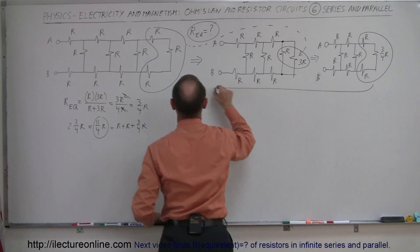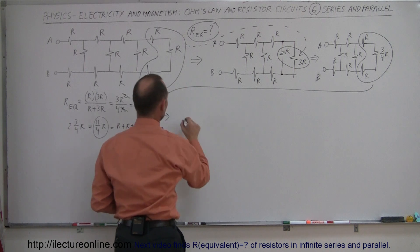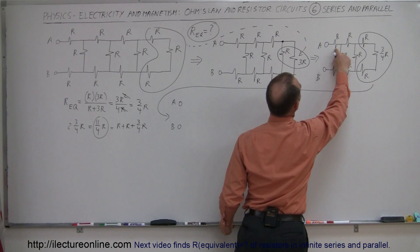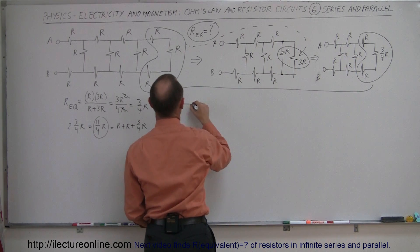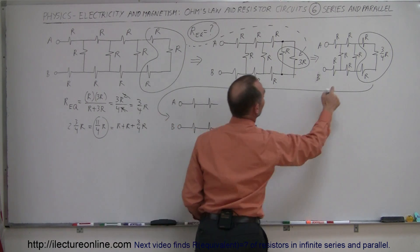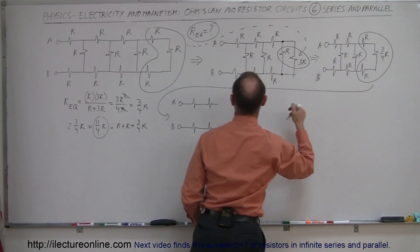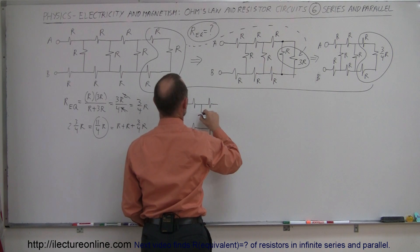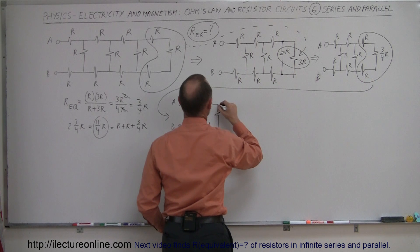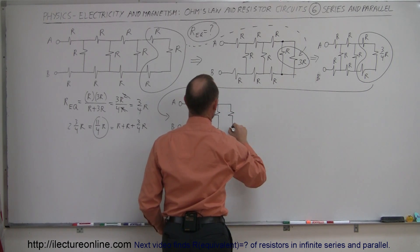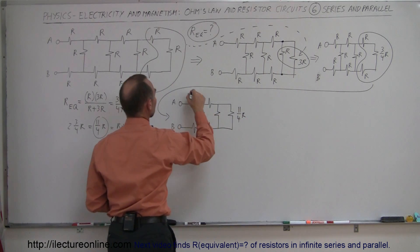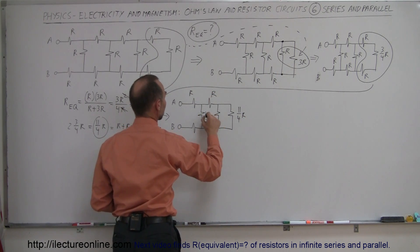So now we're going to redraw the circuit. In our circuit we still have an A and a B. Notice we still have these two resistors down here the same, and we still have this resistor and this resistor. Now those three resistors combined will form a single resistor and that resistance will be 11/4 R, and everything else will still be a single R of resistance.